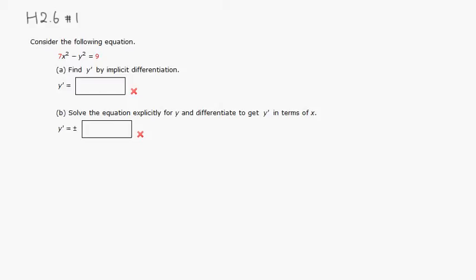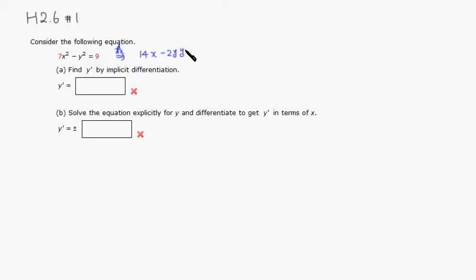So for implicit differentiation, we're going to take the derivative directly. If you take the derivative with respect to x, this term is just written in x, so it's a regular derivative. Put 2 in front — 2 times 7 is 14 — and subtract 1 from the power, so it's just 14x. The derivative of negative y squared would be negative 2y, but we have to multiply by dy/dx, or y prime. The derivative of the right-hand side is zero since it's a constant.